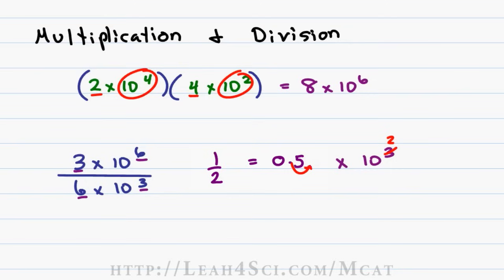In other words, we're multiplying and dividing by 10, giving me an actual answer of 5 times 10 to the 2nd, which is simply 500.